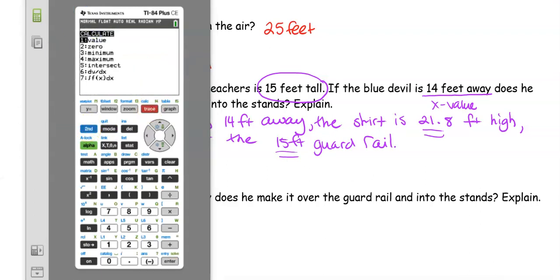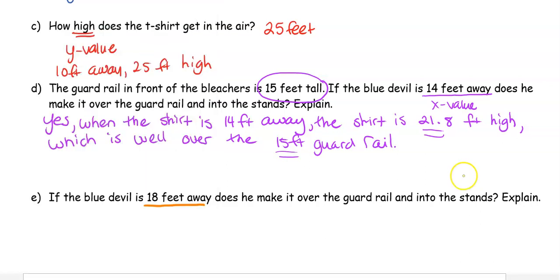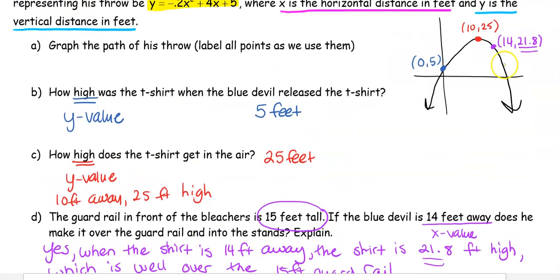I'm going to go to Value again. He's 18 feet away, so I'll type in 18. At 18 feet away, he is 12.2 high. I'll put that on my graph: at 18 feet we are 12.2.